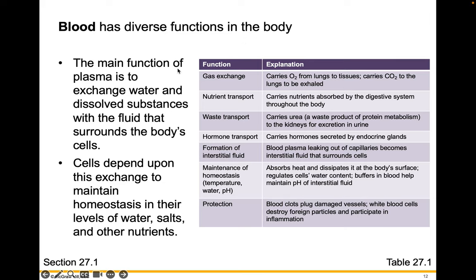Blood has diverse functions in the body. The main function of plasma is to exchange water and dissolved substances with the fluid that surrounds your body's cells. Cells depend upon this exchange to maintain homeostasis in their levels of water, salt, and other nutrients. Homeostasis is how cells work to keep their internal environments constant — constant water level, constant salt level, and keeping nutrient levels consistent.